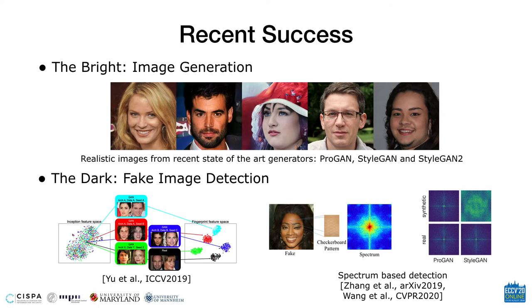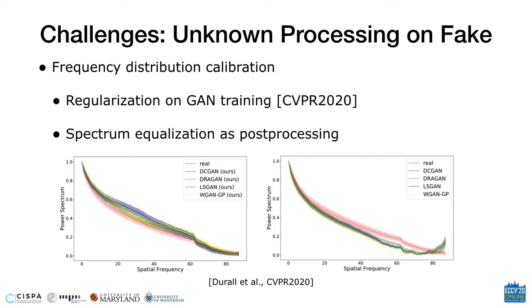However, those fake images threaten the secure environment in the digital area, and the misleading information may cause losses to individuals or organizations. Fortunately, recent works have shown such fake images can be detected easily by training a classifier with the images themselves and their spectral representations, finally leading to almost perfect detection accuracy in the source domain of training data.